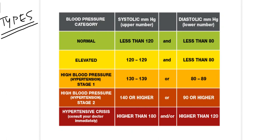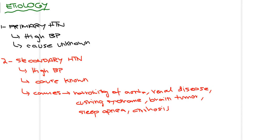This classification by the American Heart Association is really important so that patients can be managed properly. Regarding etiology, there are basically two types of hypertension. Primary hypertension is the common one — 90% of hypertensive patients have primary hypertension — where blood pressure is elevated but the cause is not known. Secondary hypertension accounts for 10% of patients, and in this case the cause is known.